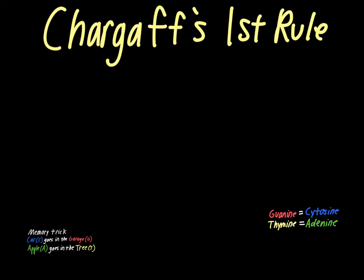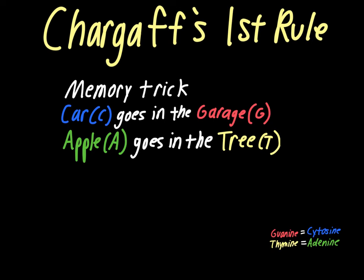There's a way to remember this. If you're looking for a memory trick, remember the phrase 'the car goes in the garage' — so C pairs with G. And then 'the apple goes in the tree' — so A pairs with T. We often refer to the different nucleotides just by their first letter: C, A, G, and T, because guanine, thymine, cytosine, and adenine is a little cumbersome to work with all the time. This is Chargaff's first rule: cytosine always goes with guanine, and adenine always goes with thymine.